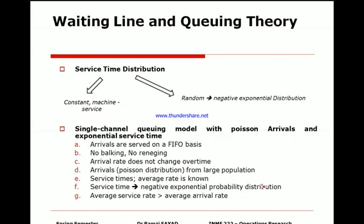The main conditions and characteristics for waiting line and queuing theory: arrivals are served on a first-in, first-out basis — the first person in the queue is the first one out. There is no jumping the queue, no balking, no reneging — you are not allowed to change lanes or leave the queue. The arrival rate does not change over the period you are studying it, whether an hour or a day.